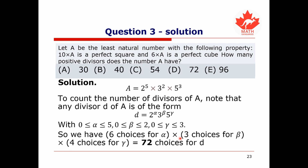To count the divisors of a, note that any divisor d of a is of the form 2 to the alpha times 3 to the beta times 5 to the gamma, where alpha can be 0, 1, 2, 3, 4, or 5 (6 choices), beta can be 0, 1, or 2 (3 choices), and gamma can be 0, 1, 2, or 3 (4 choices). So in total we have 6 times 3 times 4 equals 72 different divisors. The answer is 72.